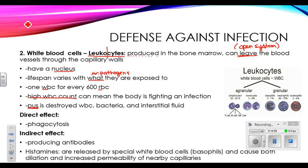There are a bunch of different types of white blood cells, and getting into the technicalities of each type would take weeks. We're going to talk about leukocytes in general and mention a couple of specific types. White blood cell is actually a fairly large category encompassing a bunch of different cells that have slightly different roles.